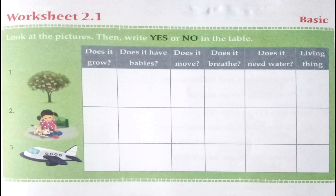Our first picture is a tree. Does it grow? Yes, so you have to write yes in the table. Does it have babies? Yes. Does it move? Yes — a tree can move towards light and water. Does it breathe? Yes. Does it need water? Yes. So it is a living thing, and in that column you can write yes.